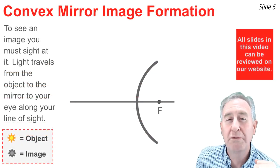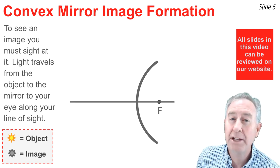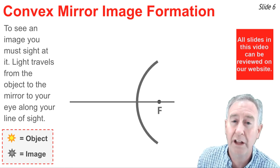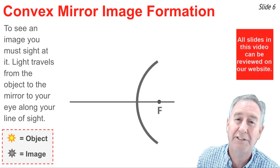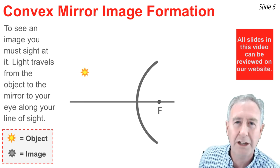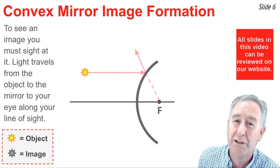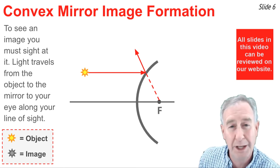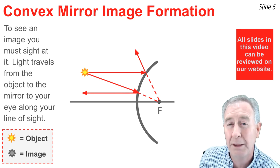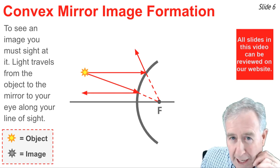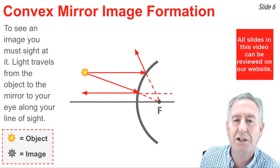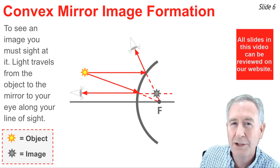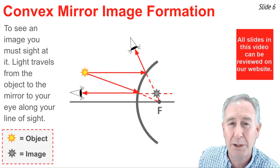We can use these two rules of reflection to determine where and how an image is formed. The basis of the discussion is that to see an image, you must sight along a line at the image location. When you do, a ray of light will come from the object to the mirror to your eye along your line of sight. One ray of light travels parallel to the principal axis towards the mirror and reflects in line with the focal point. Another ray heads towards the focal point on the way to the mirror and reflects parallel to the principal axis. Any eye position looking along these lines of sight would see the image, because these lines can be extended backwards to the image position.